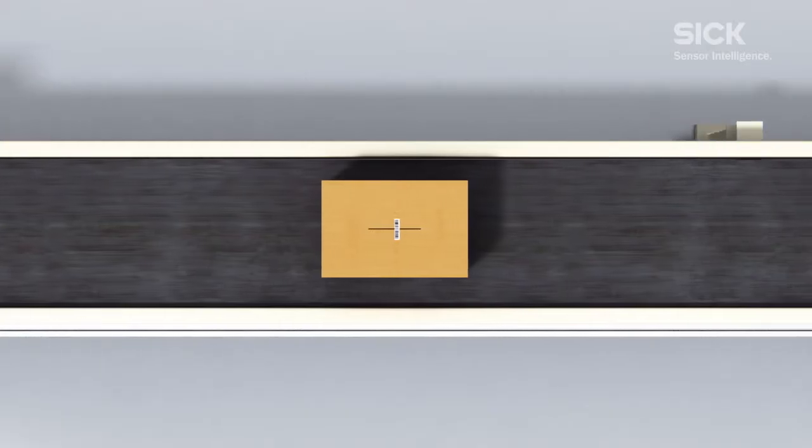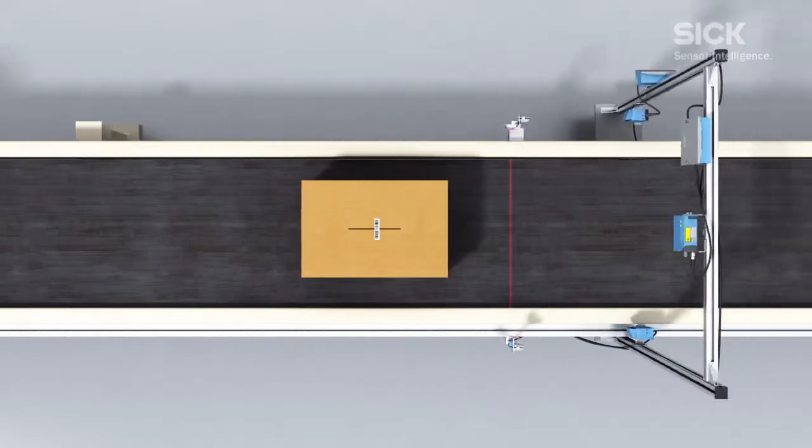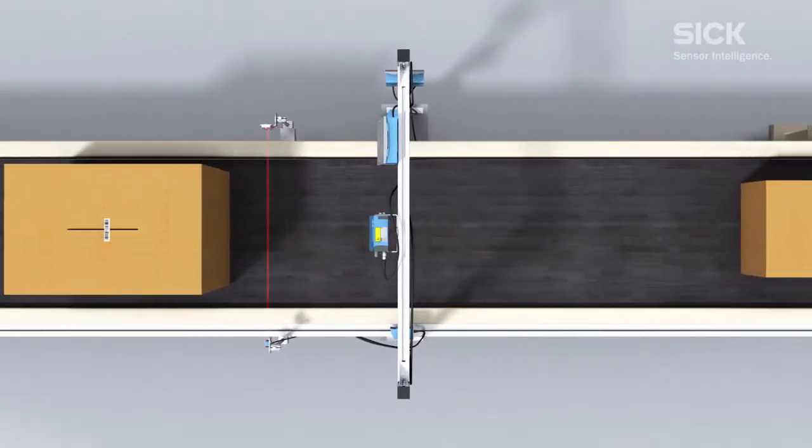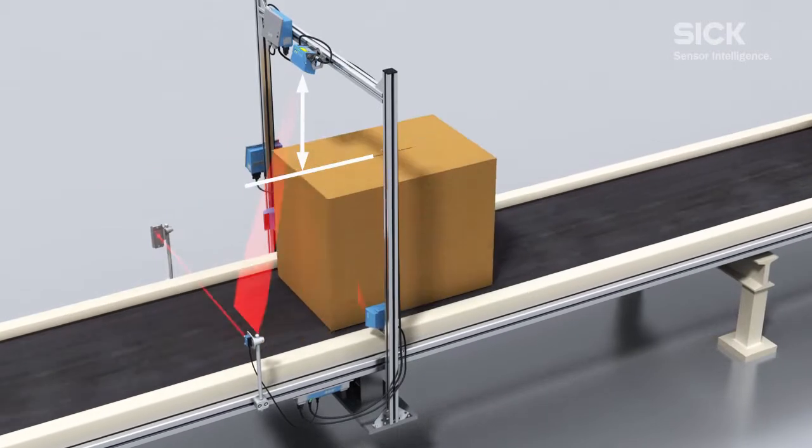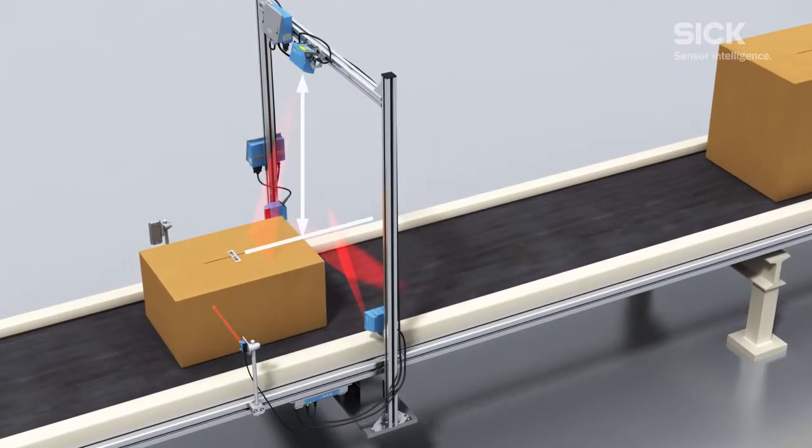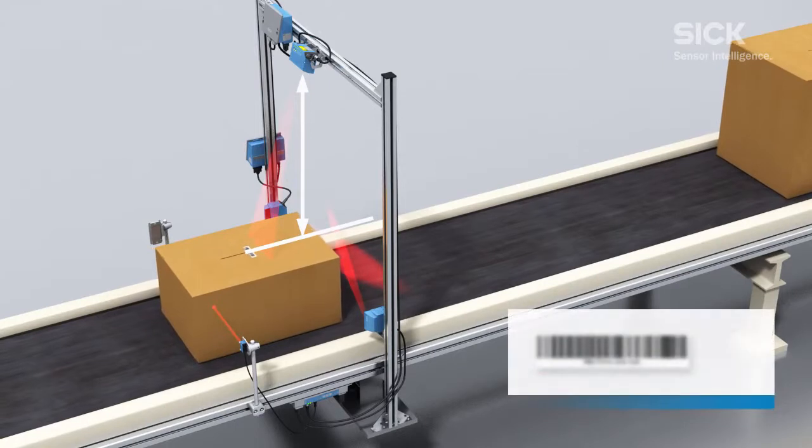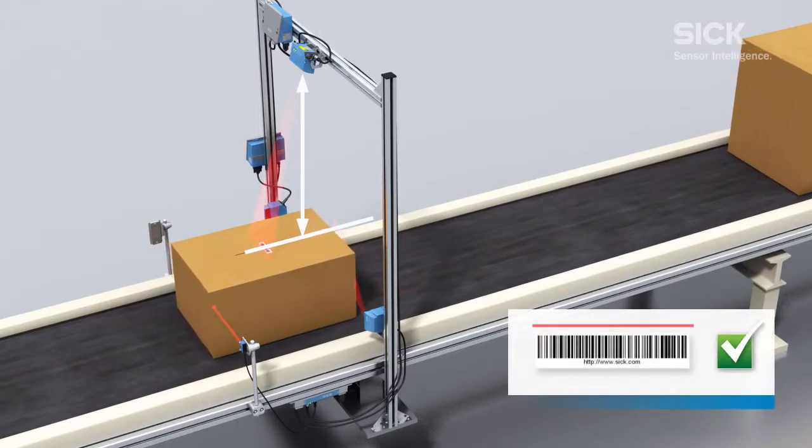The CLV-650 with integrated autofocus function is used for reading from above. The autofocus function automatically adjusts to the varying object height so that it can reliably decode barcodes at different reading distances.